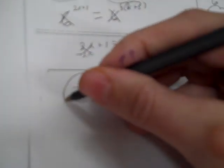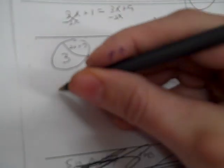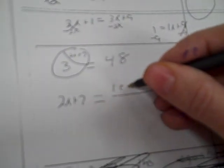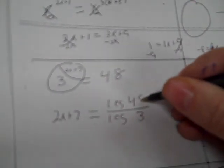Okay, next one. Now, it's only happening on one side, so I know I can use my log over log. So, 2 times x plus 7 equals log divided by log. So, the base of 3, and then 48.